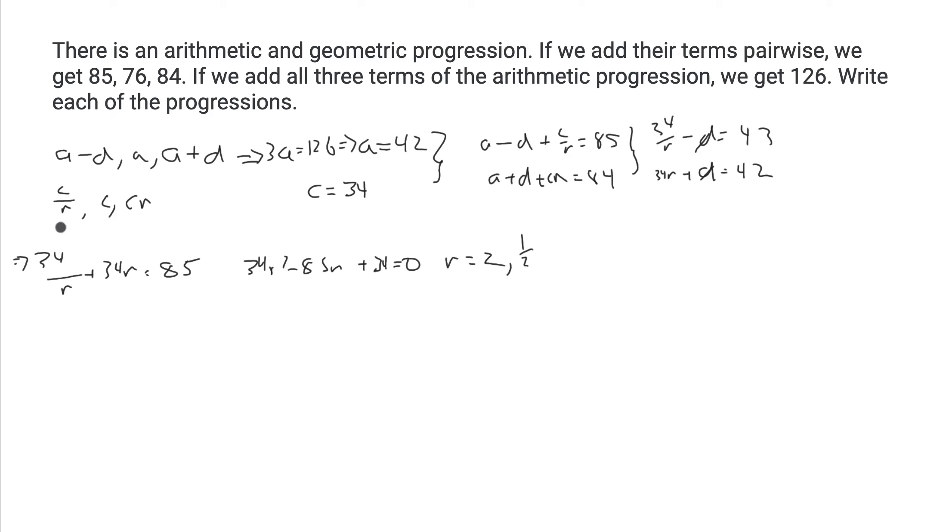If r is 2, we can now figure out the sequence here. We get that our sequence is 34 over 2, which is going to be 17, 34, and 68 as our second sequence. Then we can use that to find what d is: 34 times 2 plus d equals 42, so 68 plus d is 42.